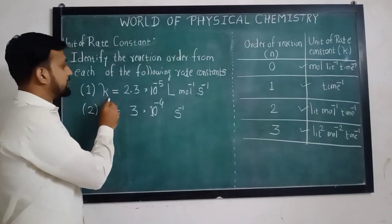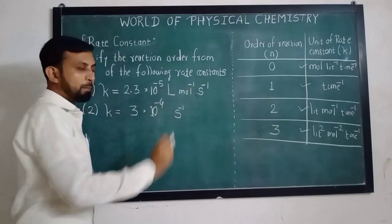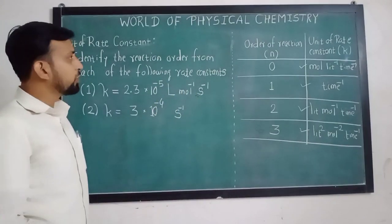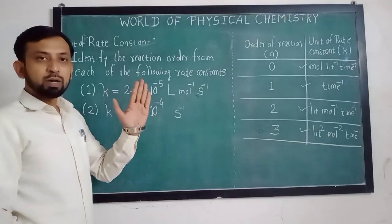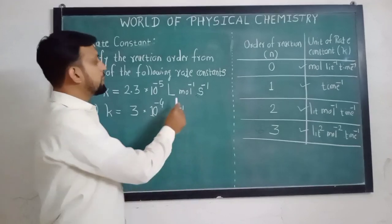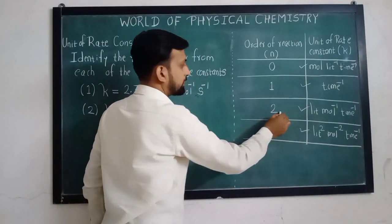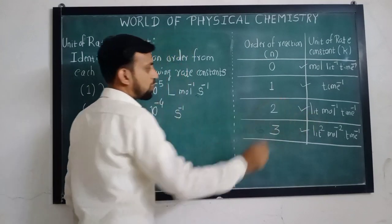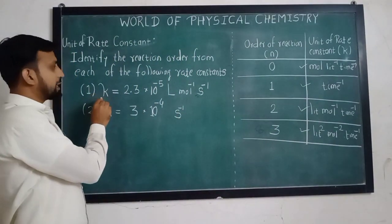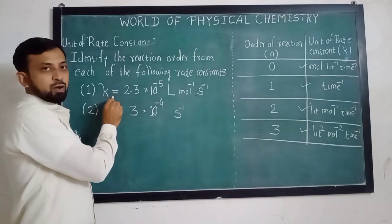In the first case, K is equal to 2.3 into 10 to the minus 5 liter per mol per second. Now we have to identify the order of reaction. If we know the unit of rate constant for different orders, we can easily predict. Liter per mol per second is the unit for a second order reaction. Therefore, in the first case, it is a second order reaction.